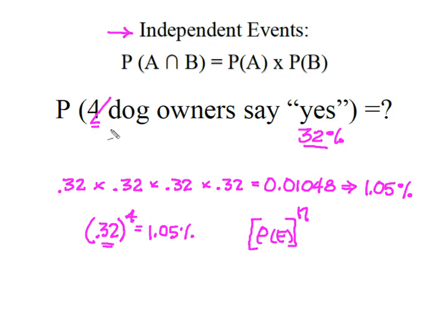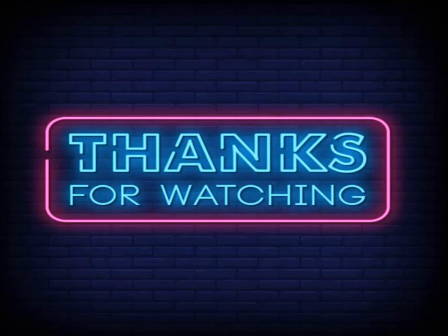So in this case, if I wanted to know six dog owners, I would just take 0.32 and raise it to the sixth power. As always, I hope that you found this useful and thanks so much for watching.